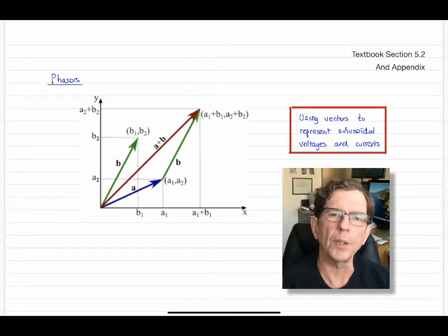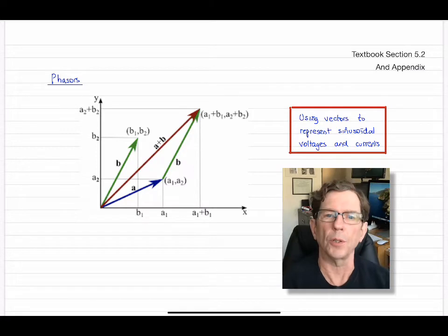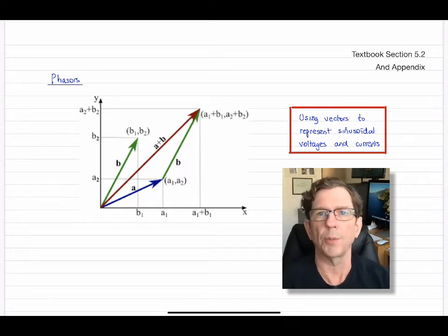We're now looking to find an easy way to manipulate them in simple expressions like KVL and KCL. So unlike DC circuits, our voltages and currents were simply numbers. Now they're functions of time, they're sinusoidal expressions.